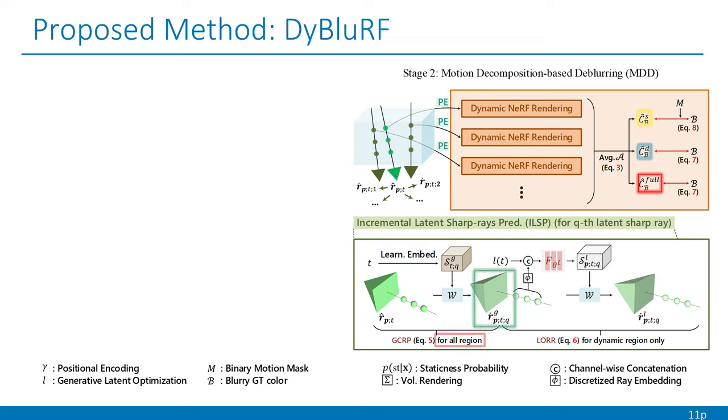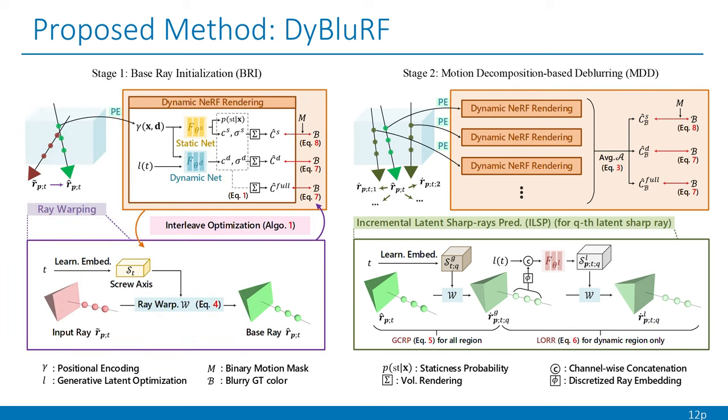Especially, for prediction of the latent sharp rays, we first model the global camera motion blur process which occurs in both static and dynamic scene components using a learnable screw axis. Then, we further decompose the blurry rays into local object motions along the global camera motion by refining each predicted latent sharp ray considering pixel-wise local object motion using a simple MLP. This overall process including BRI and MDD stages is only applied during the training stage.